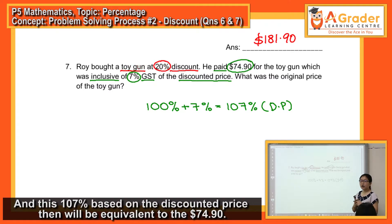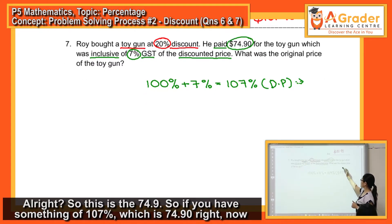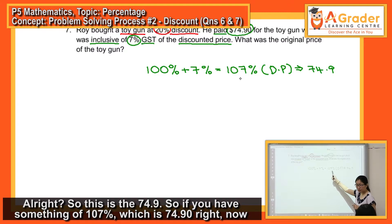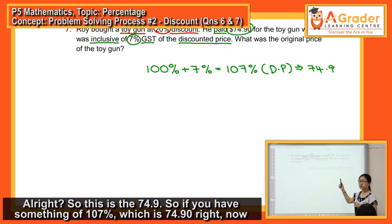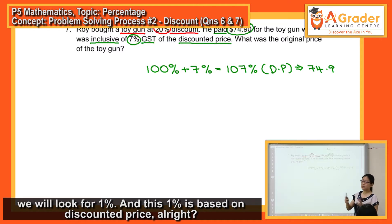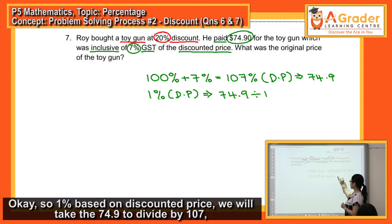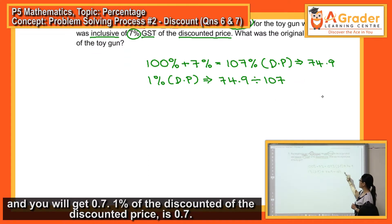This 107% is actually based on discounted price. And this 107% based on the discounted price, then will be equivalent to the $74.90. So, this is the $74.90. So, if you have something of 107%, which is $74.90, now, we will look for 1%. And this 1% is based on discounted price. So, 1% based on discounted price. If you want to find the discounted price, we will take the $74.90 to divide by $107. And you will get $0.70. 1% of the discounted price is $0.70.